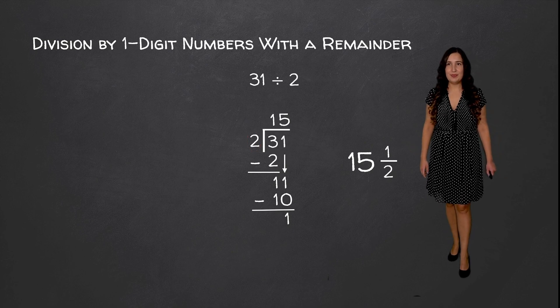Let's do our final example which is 6,623 divided by 3. We're going to set up our long division by writing our dividend inside and our divisor on the outside. Now we're going to see how many times 3 goes into our first digit. 3 goes into 6 2 times because 3 times 2 is equal to 6. We write a 6 underneath the other 6 and subtract. 6 minus 6 is equal to 0.